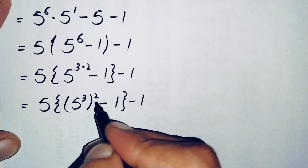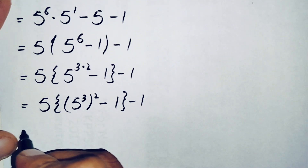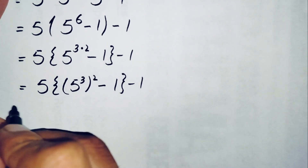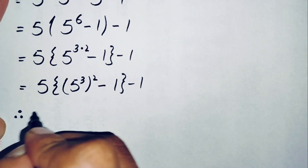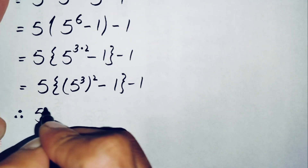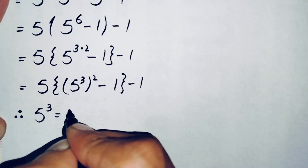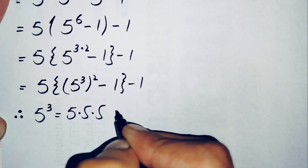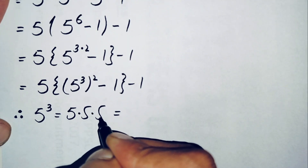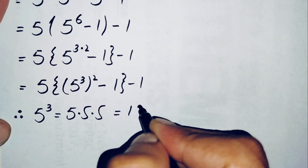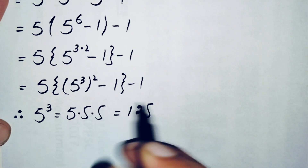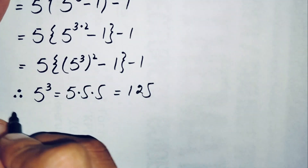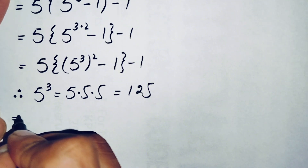We find the value of 5 raised to power 3: 5 times 5 is 25, and 25 times 5 is 125. So 5 raised to power 3 equals 125. Now we find the value of 125 squared.